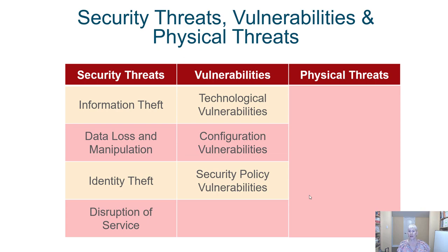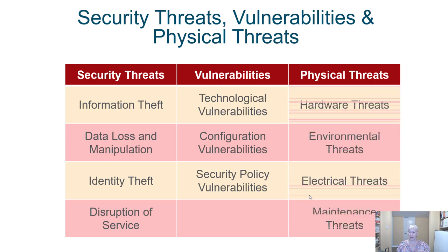The types of vulnerabilities to think about are technological vulnerabilities, configuration vulnerabilities, and whether we have vulnerabilities because we don't have strong security policies. There are also physical threats: hardware could be damaged, environmental problems like rain damage or broken plumbing, fire, electrical hazards, and general maintenance. All of these are different types of threats to consider.